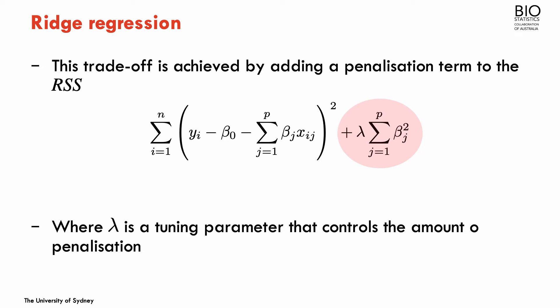This bias-variance trade-off in ridge regression is achieved by adding to the residual sum of squares a penalization term, which is the sum of the squares of the betas weighted by a tuning parameter lambda. This tuning parameter defines the amount of penalization. If lambda is zero, you get the OLS solution; if lambda is very high, the penalization term dominates the minimization problem.